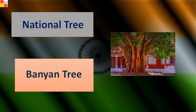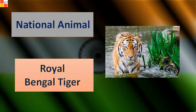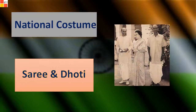National Tree — Banyan Tree. National Animal — Royal Bengal Tiger. National Costume — Sari and Dhoti.